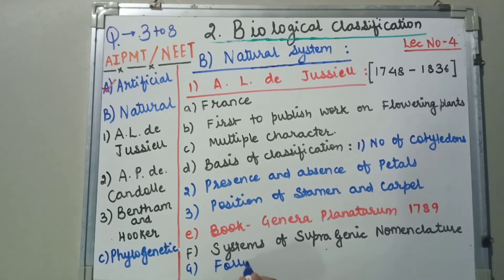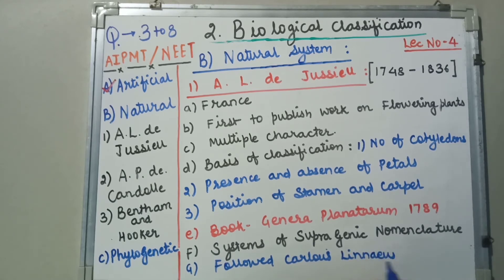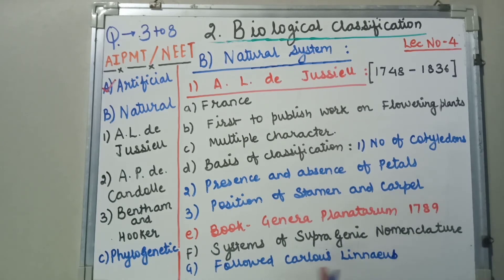He followed Carolus Linnaeus, and therefore developed the concept of supragenic nomenclature, because Carolus Linnaeus had given us the concept of binomial nomenclature.